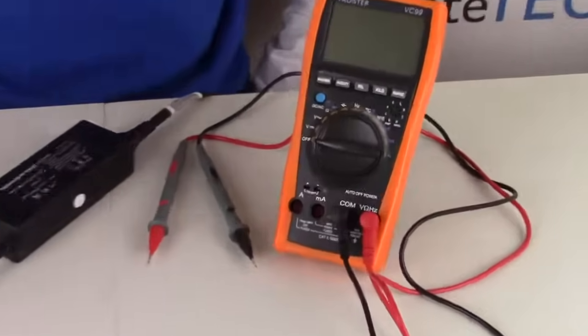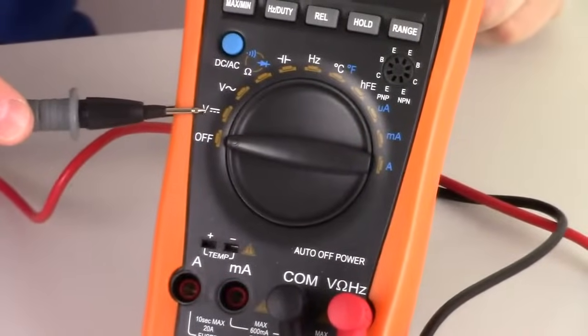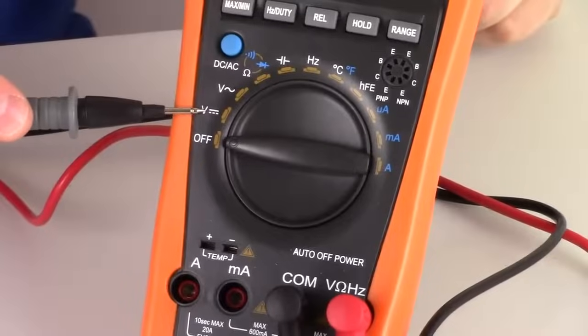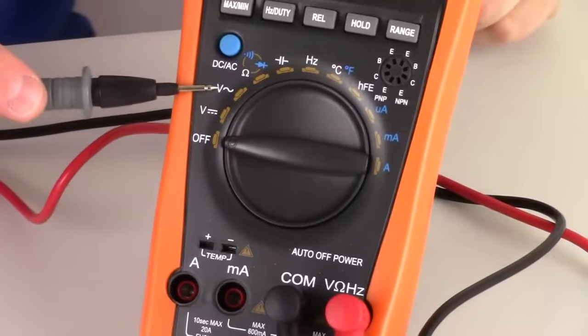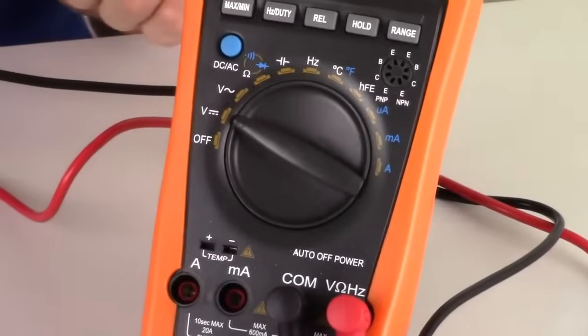So take your multimeter, and we're going to set it for the V for volts and the same symbol. The large line on top, three small lines on bottom, not this one. We're going to set it to that one. Alright, it's on.